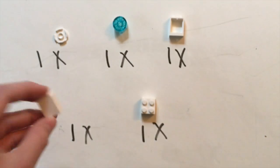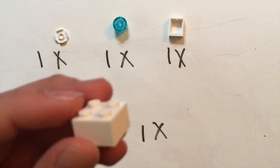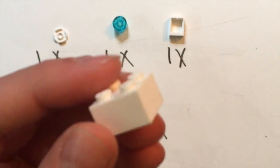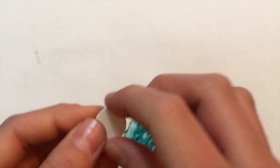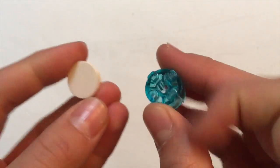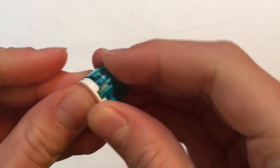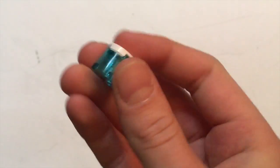And one like this. So those are all the pieces you're going to need. Okay, so the first step is to take both flat pieces and just connect them together like that. It's pretty easy.